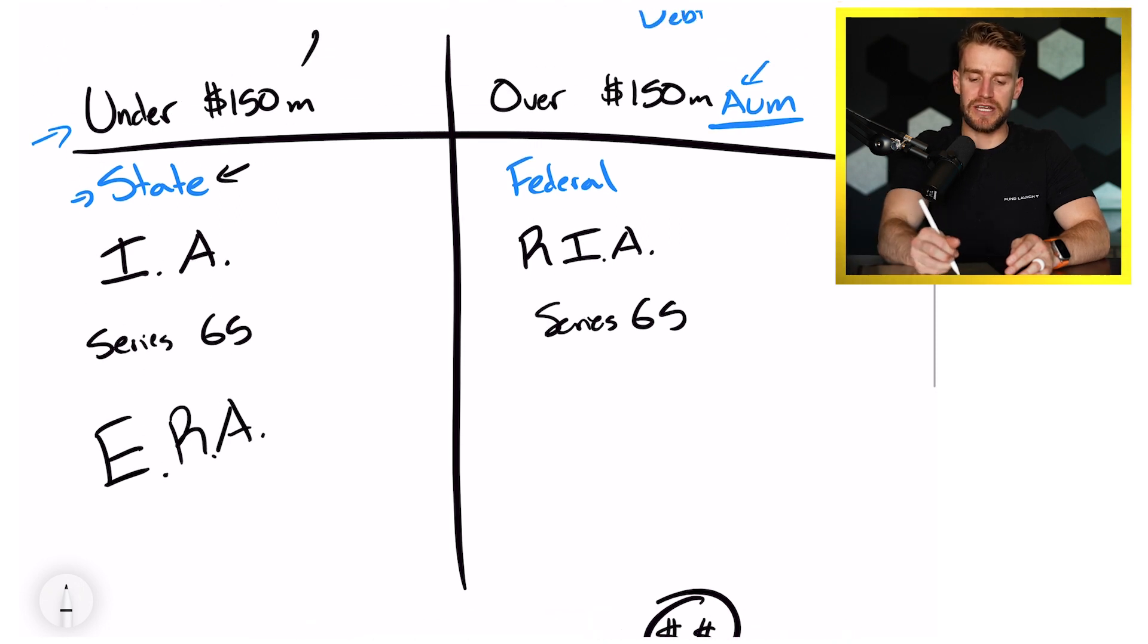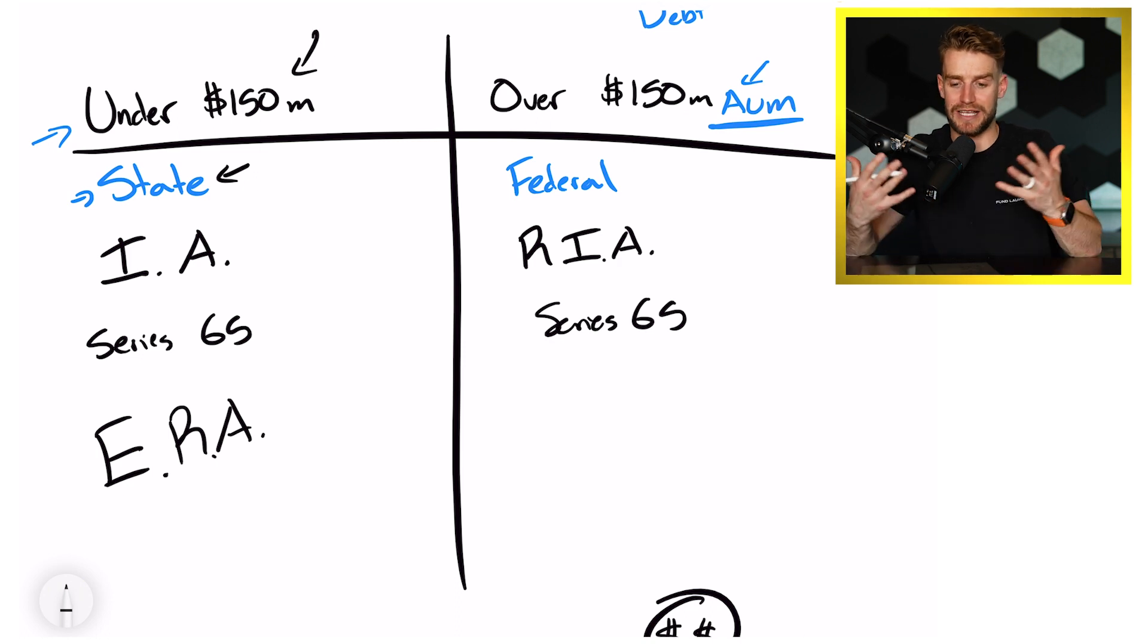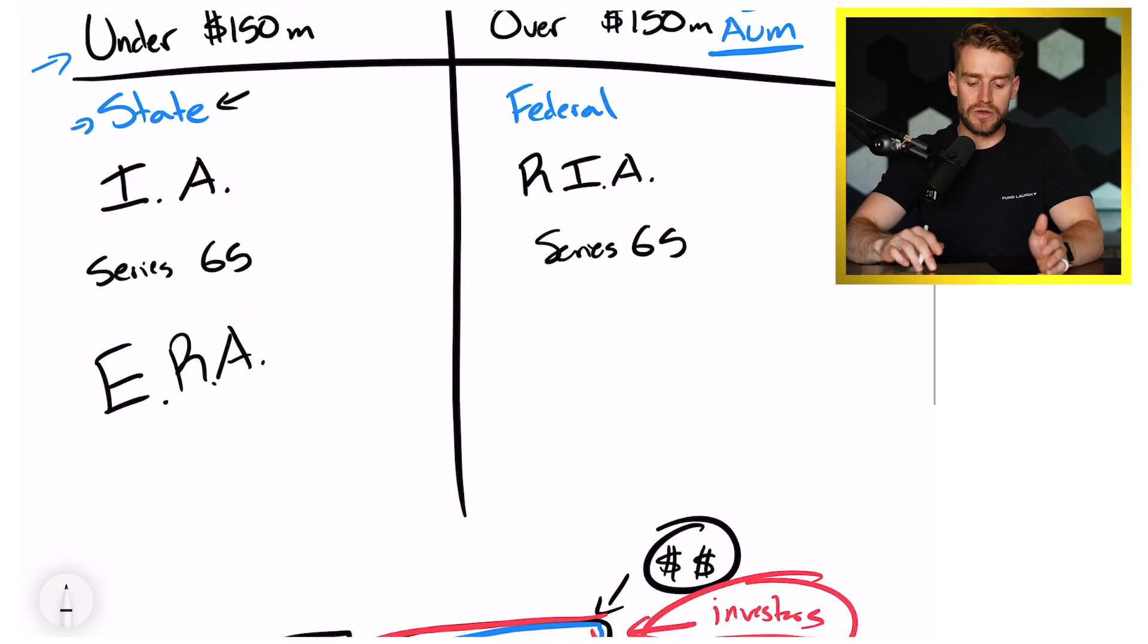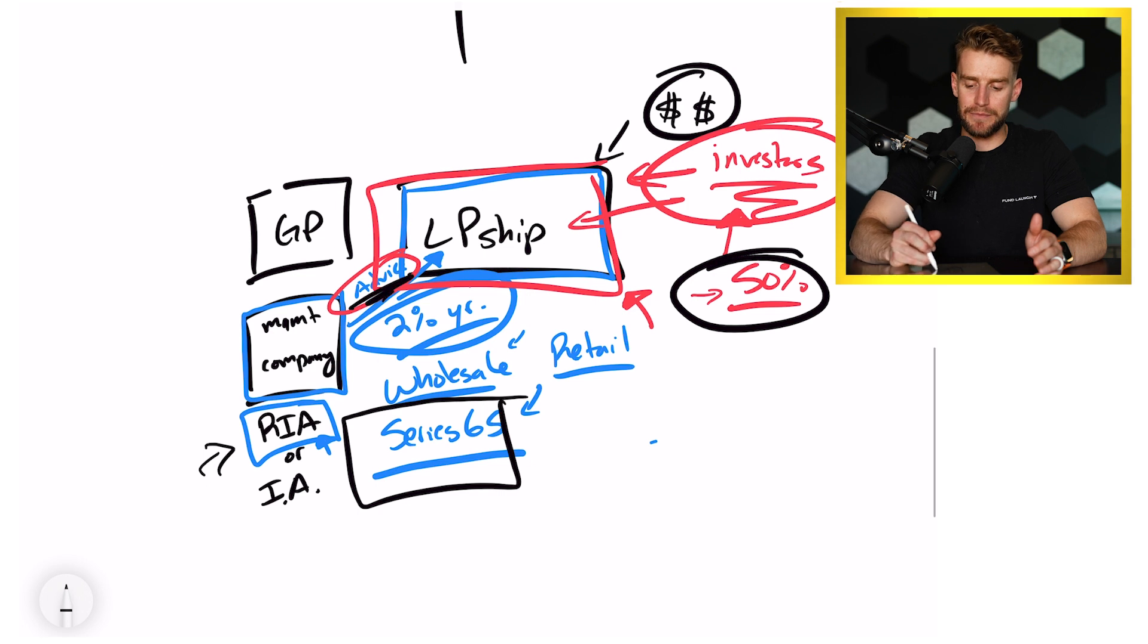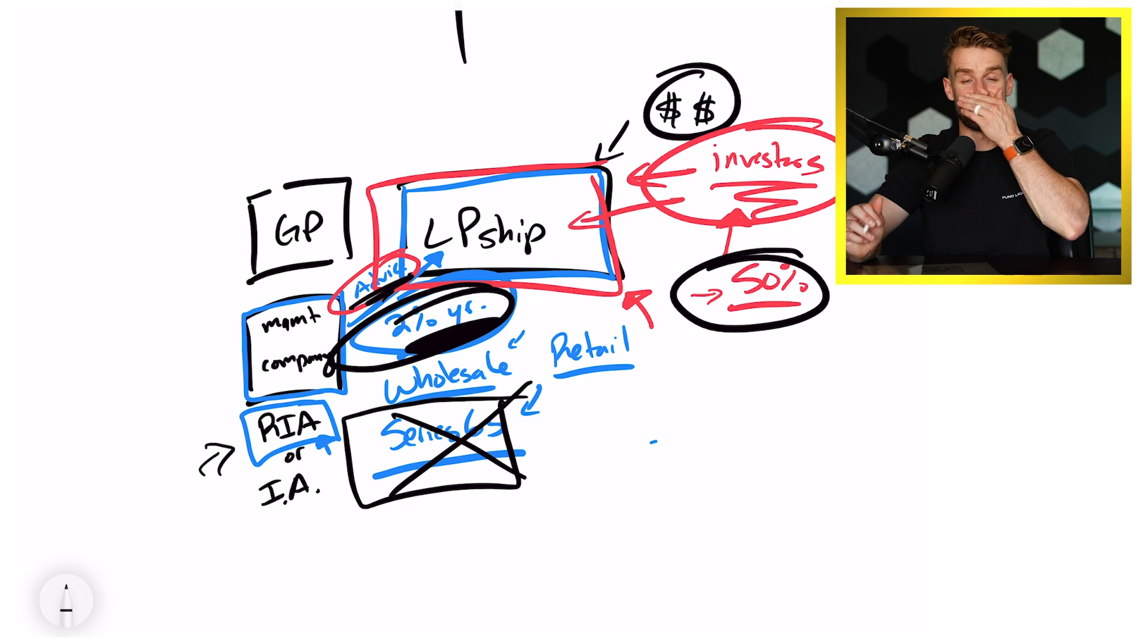Okay, this works if you're under $150 million. A lot of states do this, actually almost, I would say a majority of states let you do this. You can become an exempt reporting advisor where you're exempt from being an investment advisor or a registered investment advisor. You can actually still give investment advice and get paid for that advice, 2% a year, but you do not need to have a series 65.